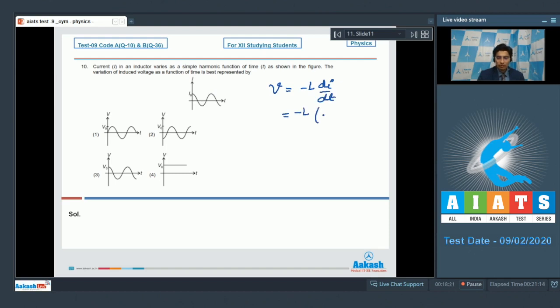The induced voltage can be written as minus L di by dt. Herein, i has a function of cos some constant t where t is the time. So we have to differentiate this with respect to time, and this will be equal to L into a sin at. And therefore, the induced voltage will have a sinusoidal graph, which means option number 1 is the correct answer. Now let us solve question number 11.